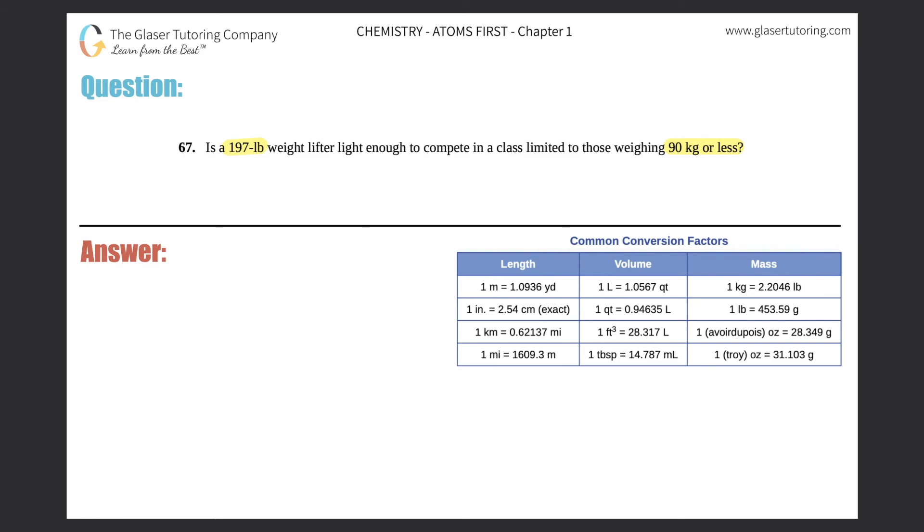Okay. So it looks like we have a discrepancy in units, right? We have 197 pounds, which is part of the English system compared to 90 kilograms or less. So basically 90 kilograms and under. This is part of your SI unit, your metric unit.